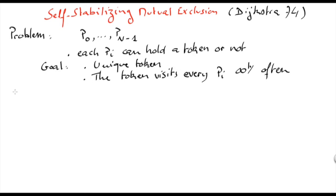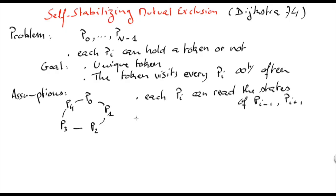In Dijkstra's solution, there are specific assumptions. First, the processors are organized in a ring, and each processor can read the states of its neighbors. Each processor can be activated, and when it is activated, the processor reads the states of its neighbors and performs a local update of its state according to the algorithm it runs. We assume that each processor is activated infinitely often.